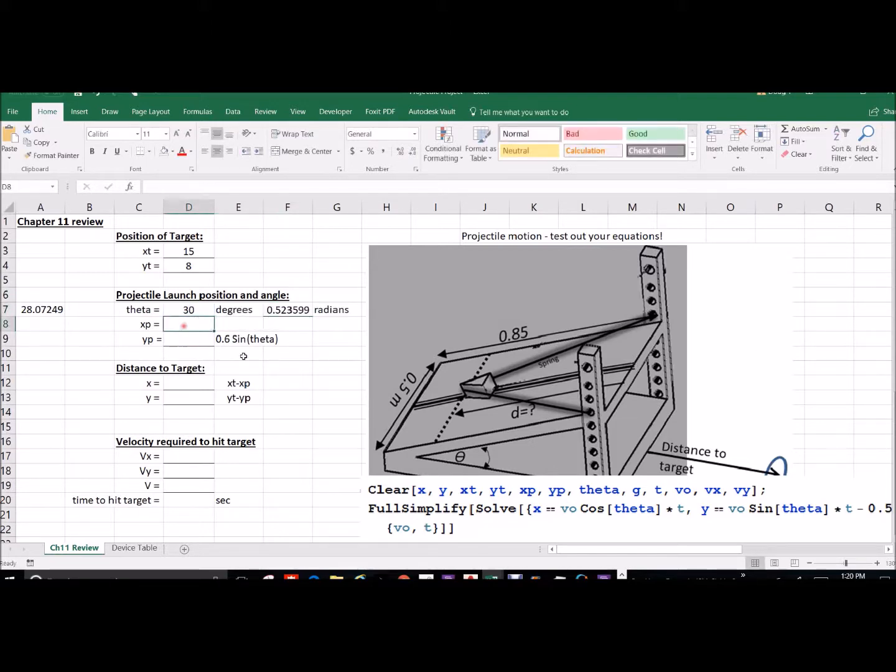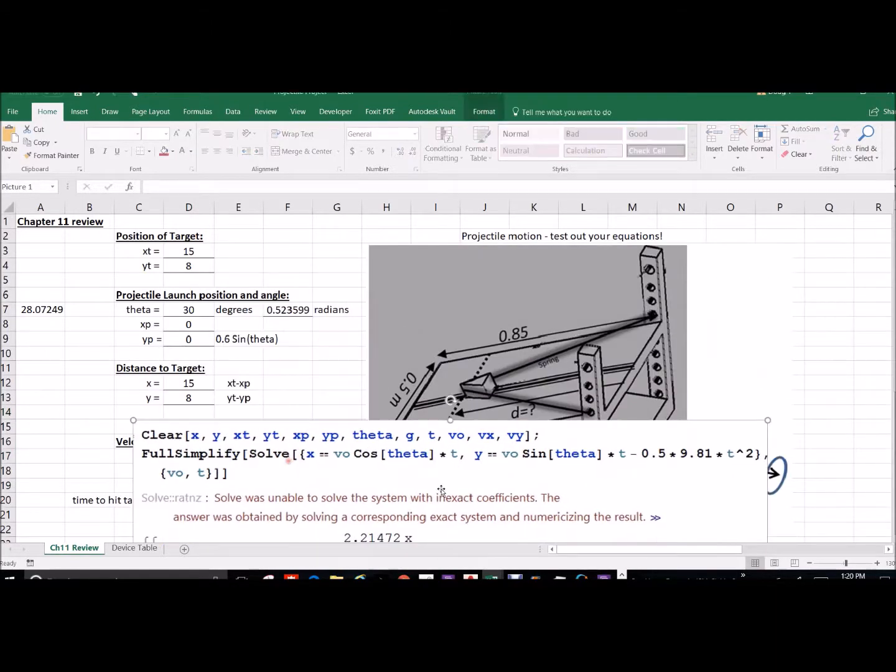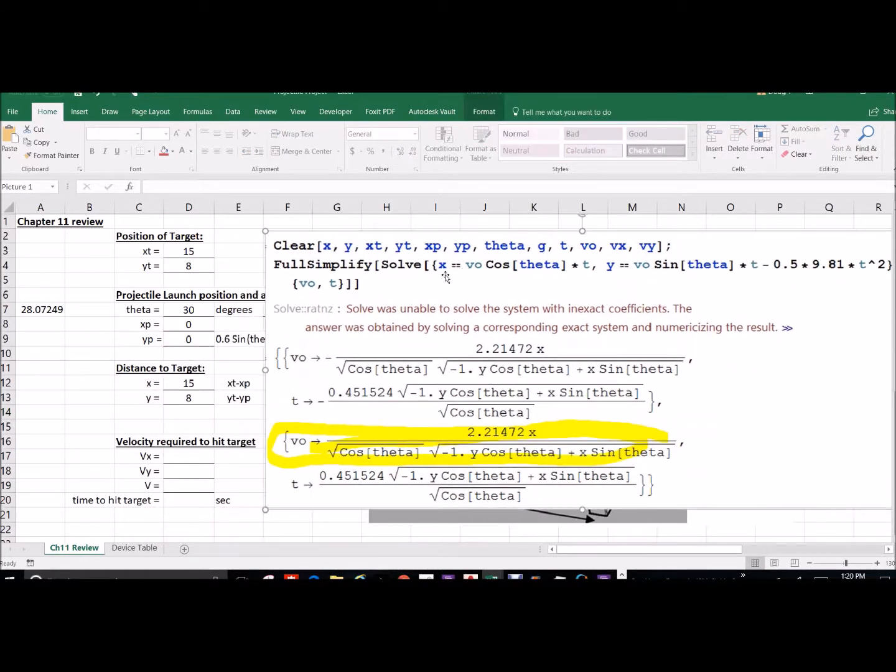I'm also going to put the position where our projectile's launched from too, and I'll just have that as (0,0) for now, but depending on your device that might be different. The distance to the target is going to be calculated based on the difference between the target position and where it leaves your device.